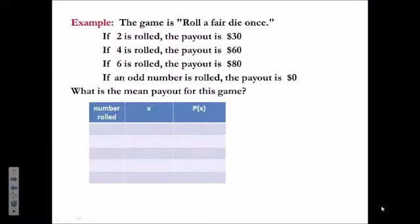Let's make a chart. If a 2 is rolled, the payout for 2 is $30. And the probability of rolling a 2, well for rolling a die, the sample space or the set of possible outcomes is 1, 2, 3, 4, 5, 6. So the probability of rolling a 2 would be 1 out of 6, one-sixth.